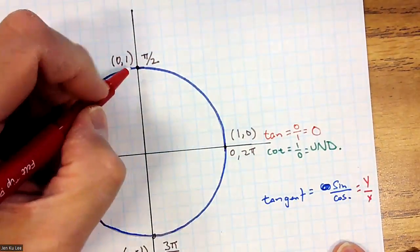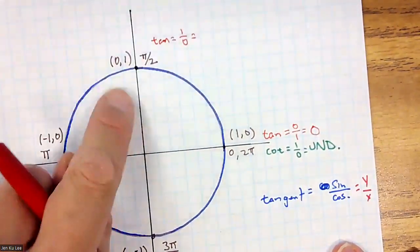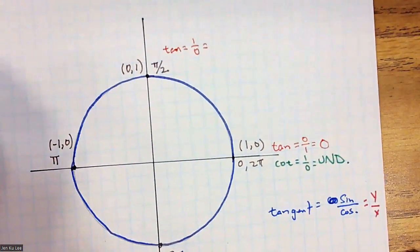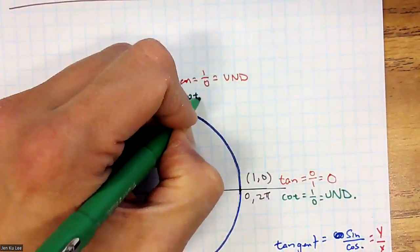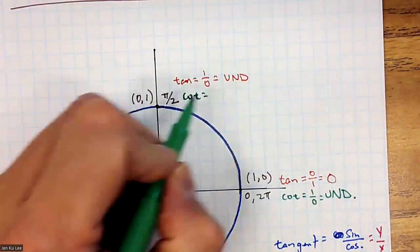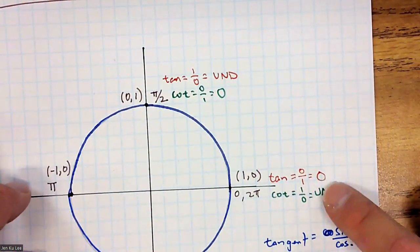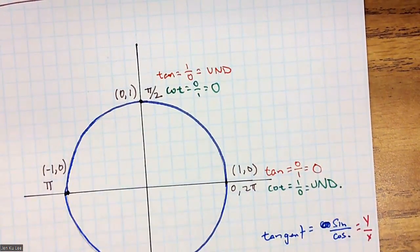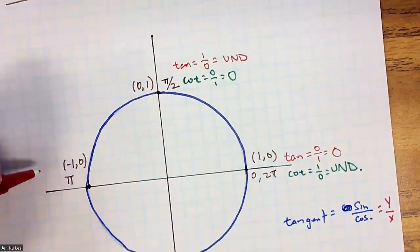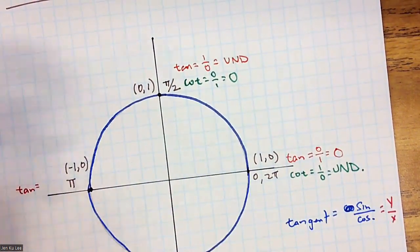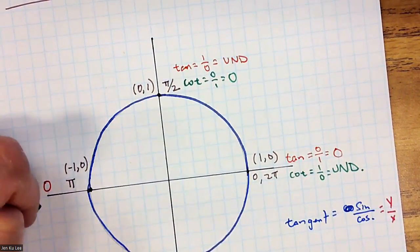At π/2, tangent is 1 over 0, which is again undefined. Cotangent is 0 over 1, or 0. Do you see the trend? If your tangent is 0, your cotangent is undefined — the reciprocal of 0 is undefined. At π, tangent is 0 over −1, or 0, and cotangent is undefined.